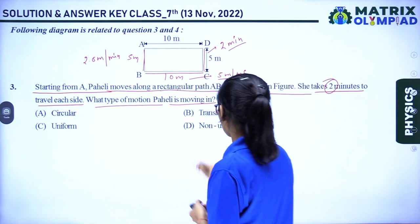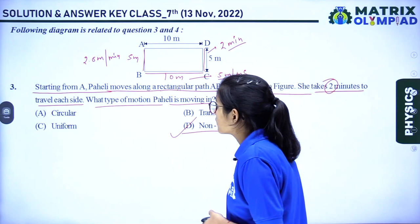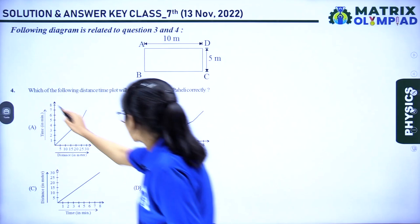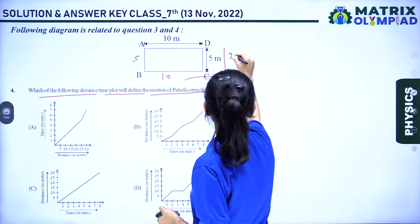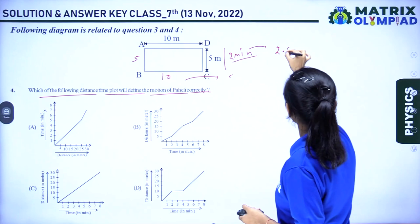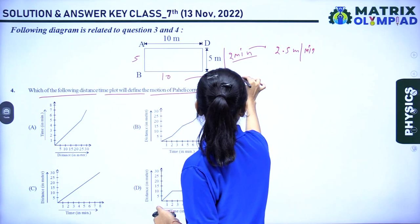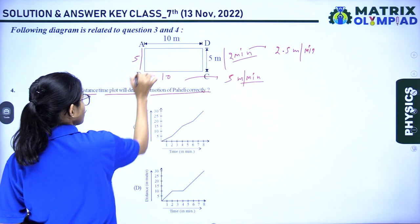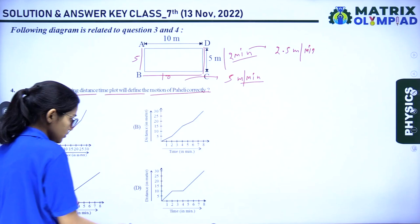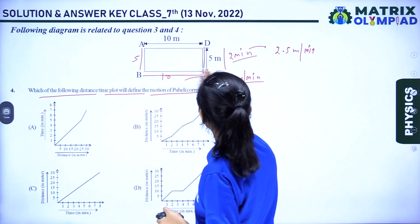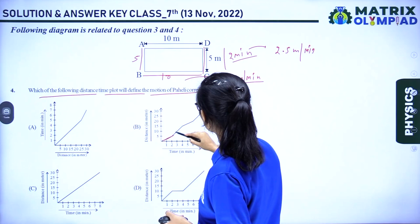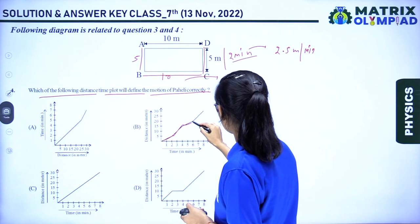Question number 4: which distance-time plot defines the motion of the valley? The path goes A to B, B to C, and C to D. The speed is 2.5 meters per minute for the first segment and 5 meters per minute for the next. The graph showing this correctly — increasing then steeper slope — corresponds to option B.